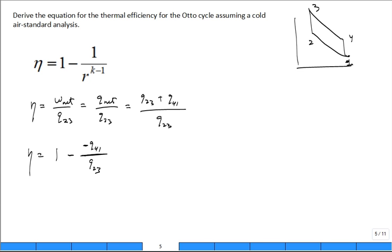We go back to what was Q 2 to 3. Is that equal to U 3 minus U 2? Or is that equal to C sub V T 3 minus T 2? Because it's a cold air standard analysis. Cold meaning constant specific heats at room temperature.